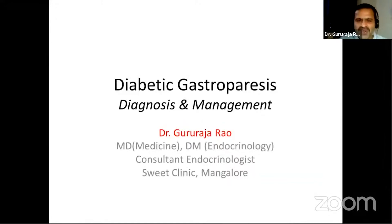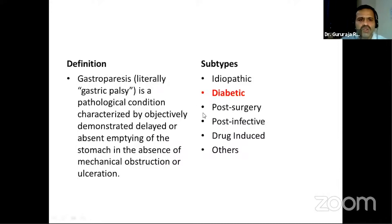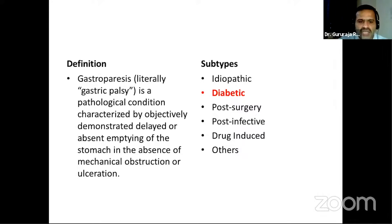Good evening everyone. Today's topic is diabetic gastroparesis — its diagnosis and management. Gastroparesis literally means gastric palsy. It is a pathological condition characterized by objectively demonstrated delayed or absent gastric emptying in the absence of mechanical obstruction or ulceration. We need to rule out obstruction as a cause. Effectively, it is a neuromuscular condition.